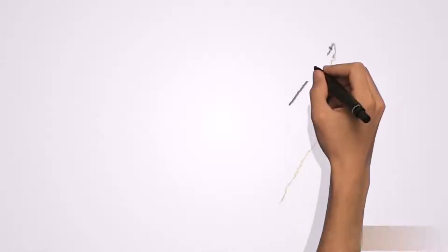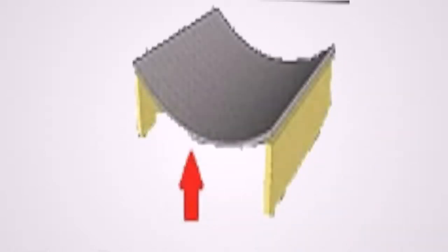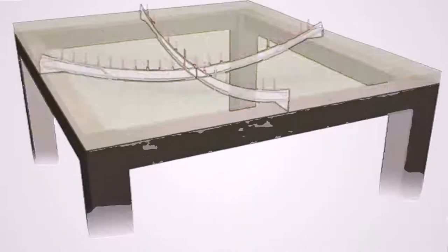As the name implies, in one-way slab bending is in one direction, that is in the direction of the shorter span, while in two-way slab bending is in two directions.